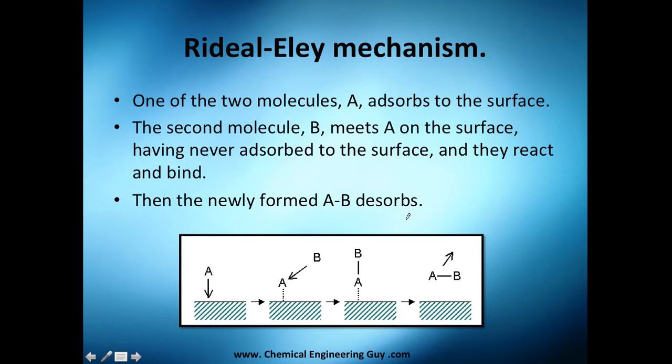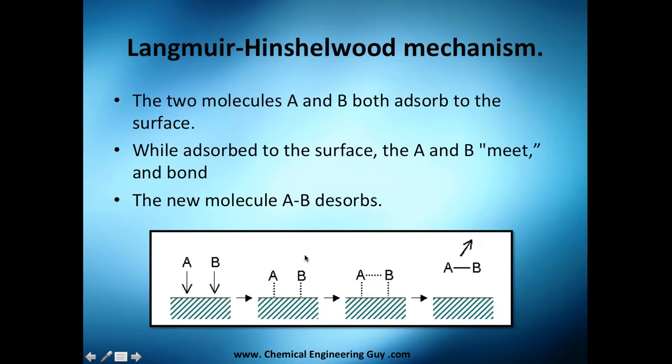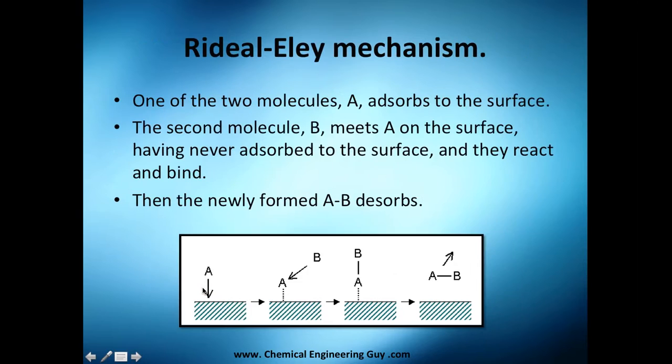The Rideal-Eley mechanism is kind of similar, but now we're going to have only one reactant adsorbed, whereas before we had two reactants being adsorbed. Of course, we still have two reactants, but only one reactant is going to be adsorbed. So one of these molecules, let's say A, is going to be adsorbed. It adsorbs, then the second molecule doesn't need to adsorb into the catalyst bed to react. It just needs one reactant being here, and then you can react it.